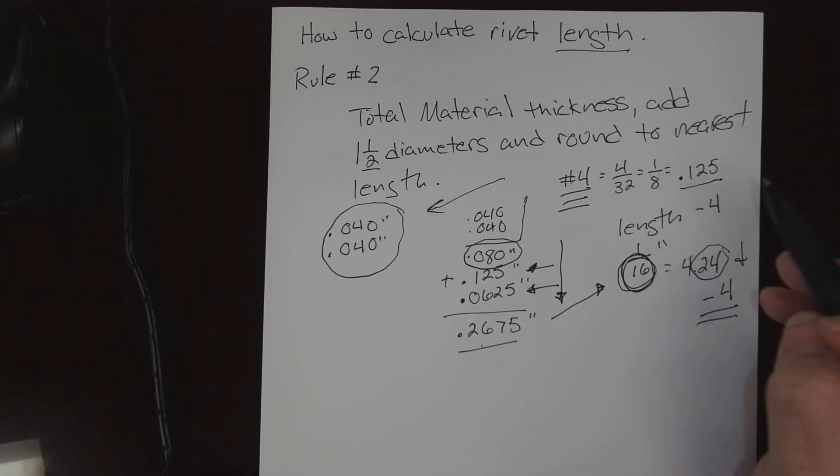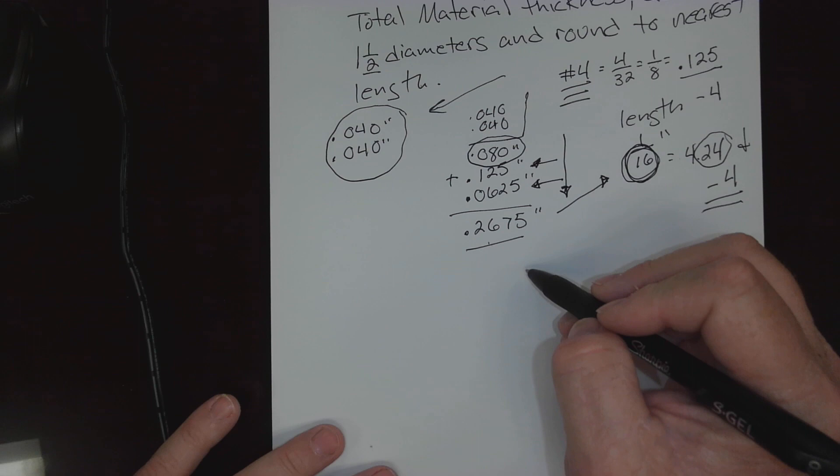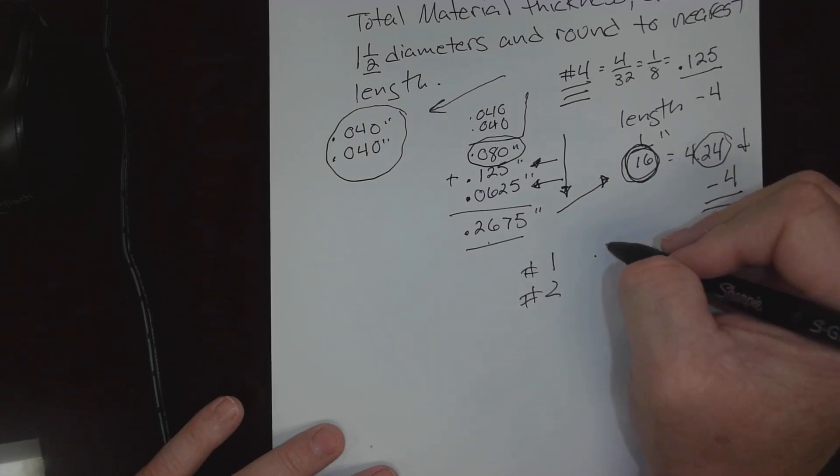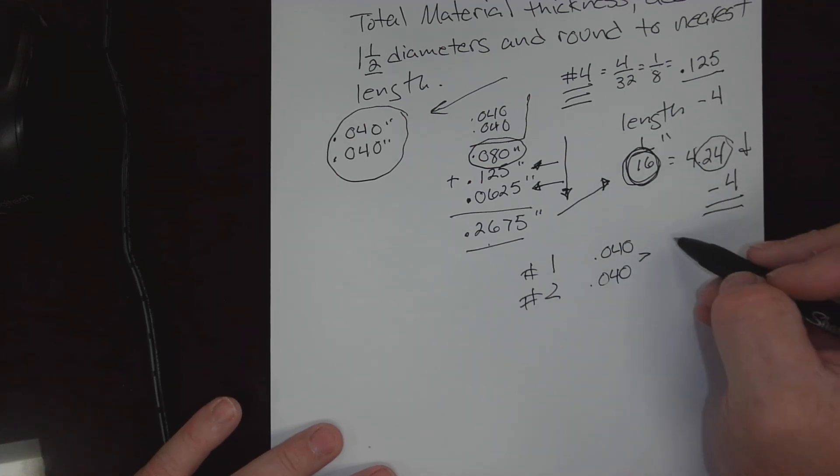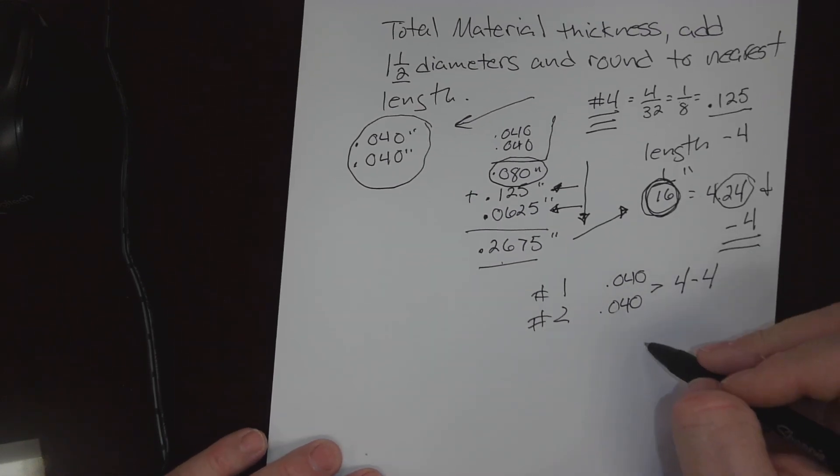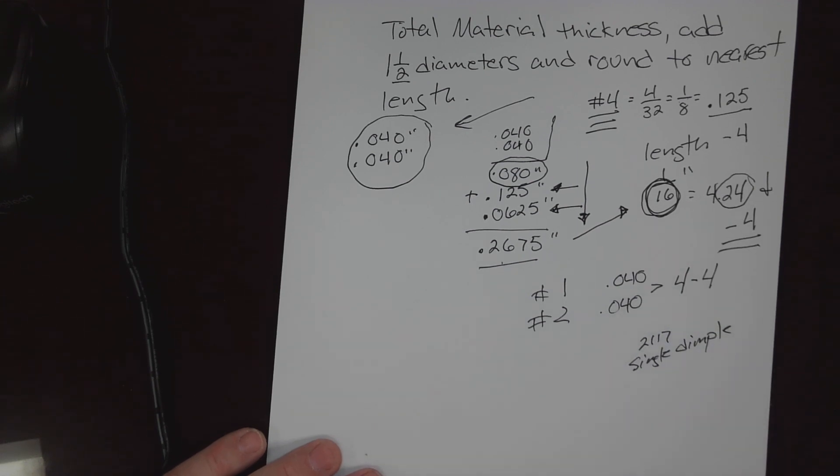So based on Rule Number One and Rule Number Two for this particular material stack up, we're going to end up with a 4/32nds by 4/16ths rivet. Now if this was going to be our most commonly used rivet, that would be a 2117 rivet, single dimple. Remember that's the most commonly used, has a single dimple, it's called a field rivet.